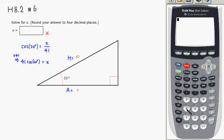Then we need to compute 41 times cosine of 20 degrees. Hit enter. So let's see, round your answer to four decimal places. The answer is going to be 38.5274.